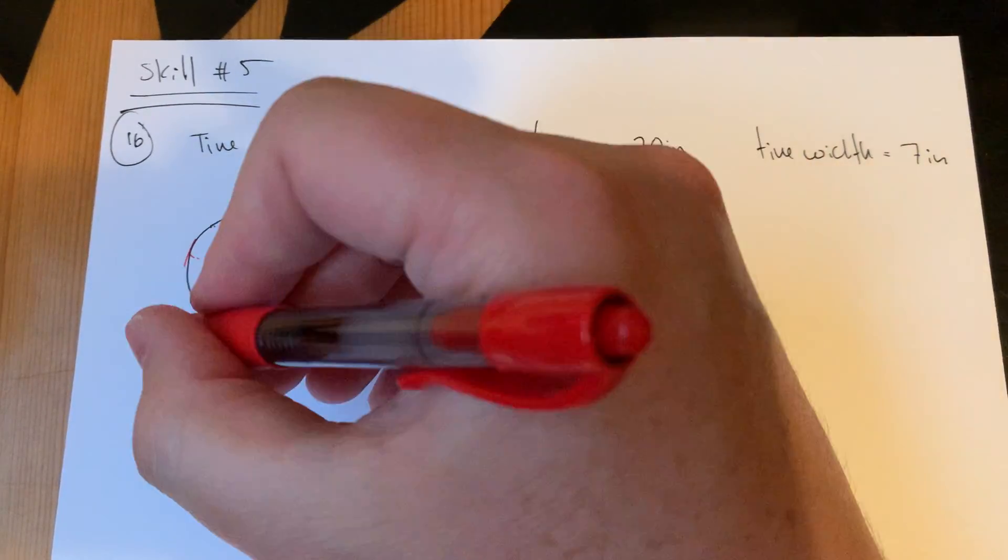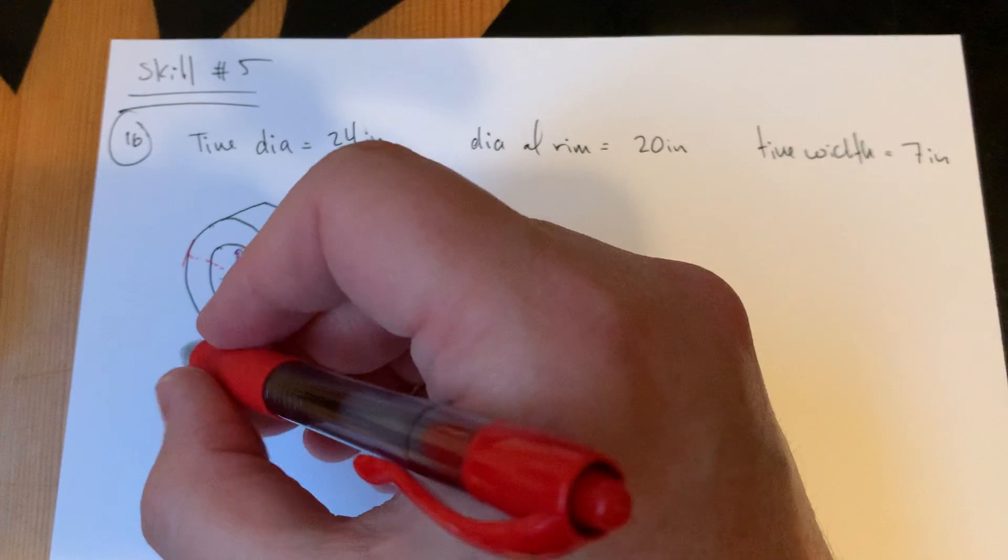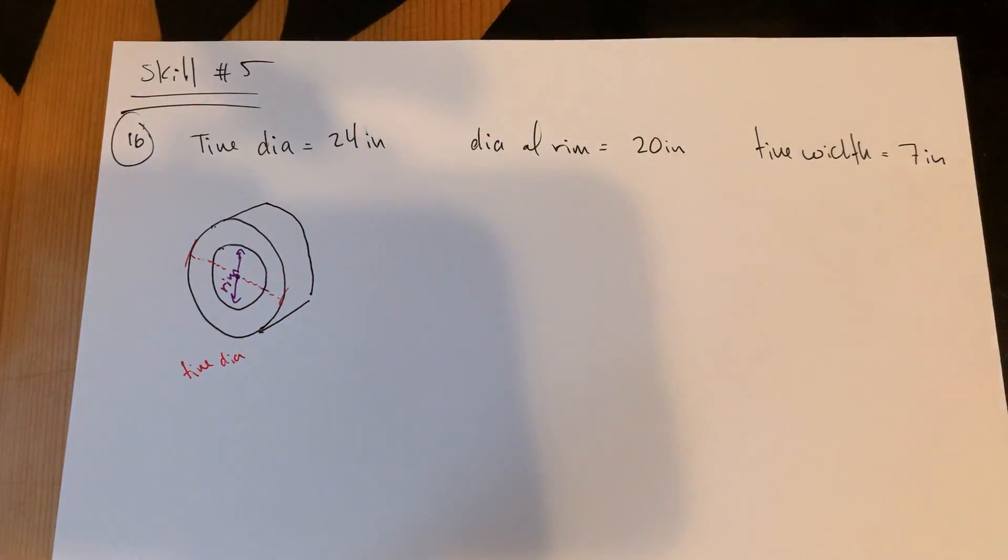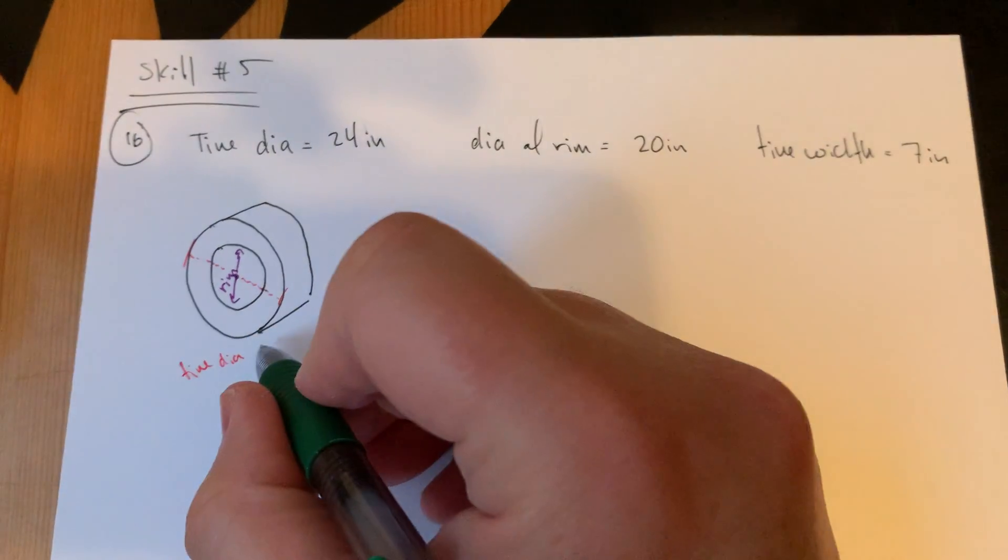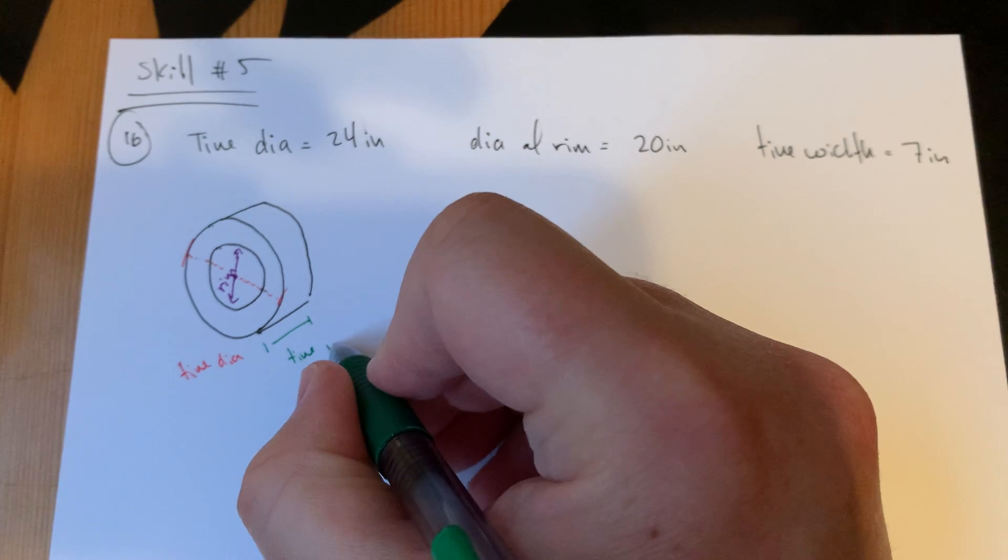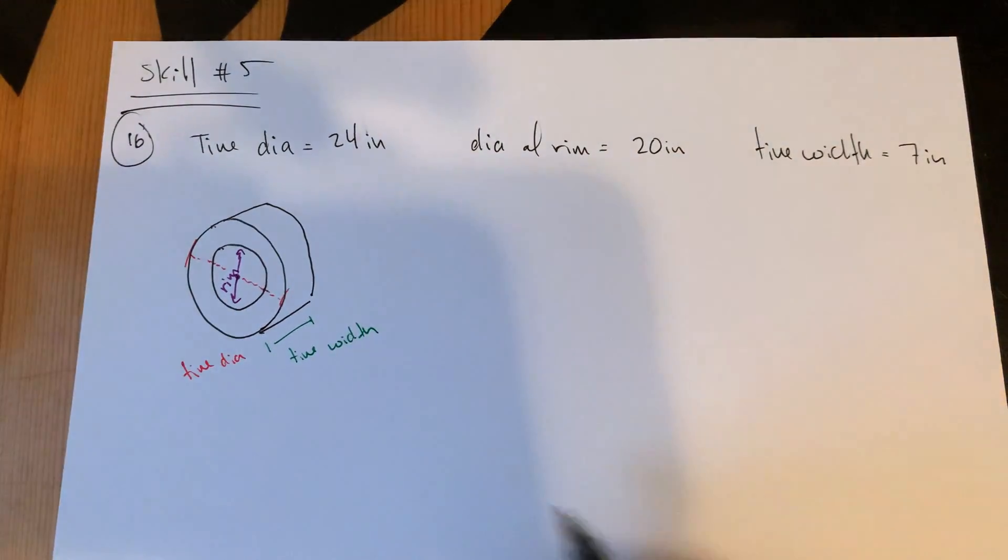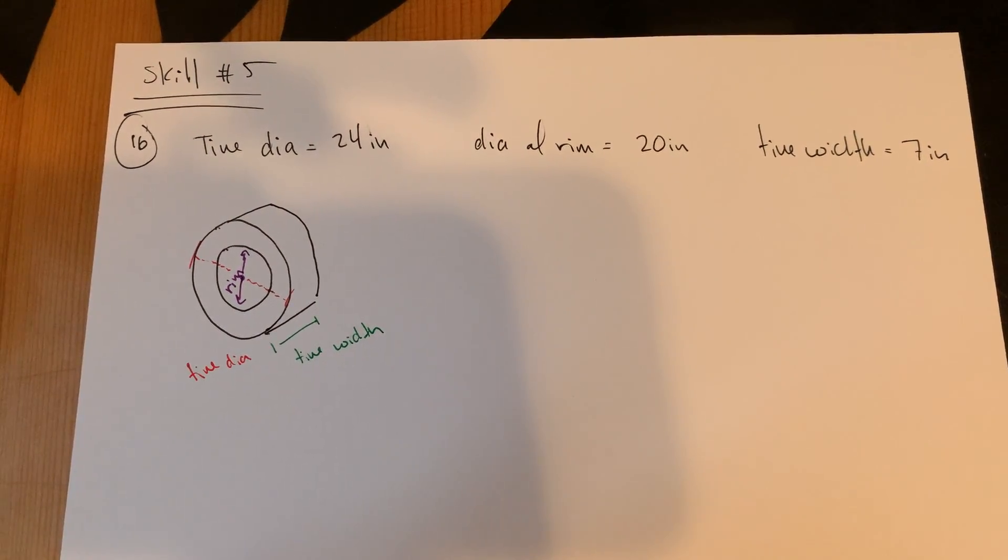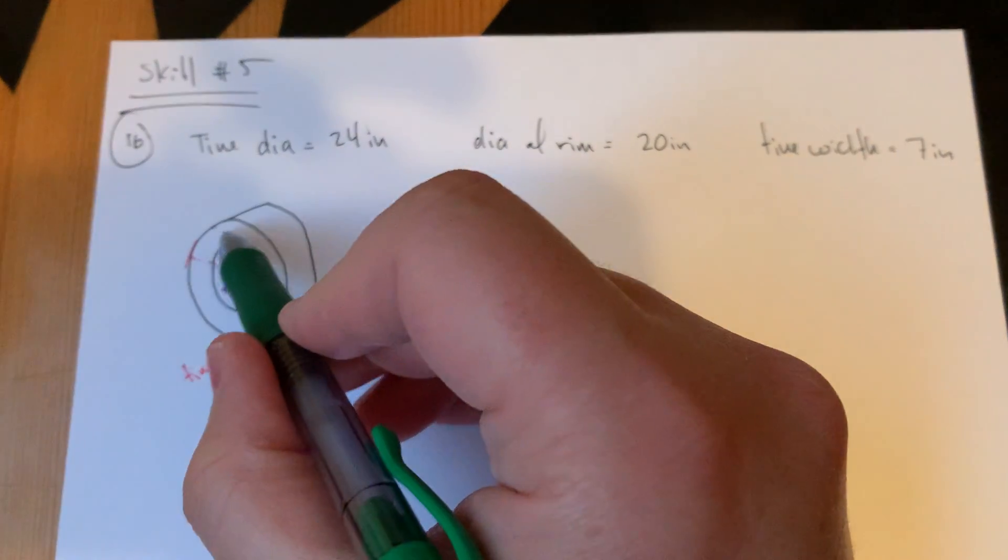That didn't really look great. That looks a little bit just like mush. But the inside here is your rim, from the edge out to the edge is the full diameter of the tire.